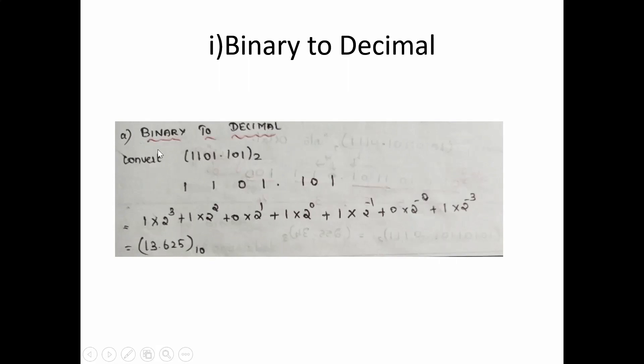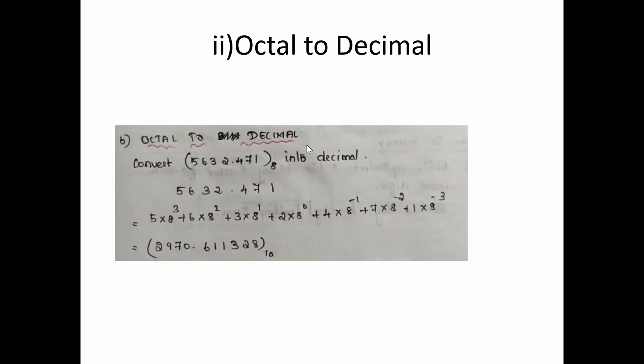This is binary to decimal. The same method is followed for octal to decimal as well as hexadecimal to decimal. The difference is instead of radix 2, we use 8 for octal and 16 for hexadecimal.